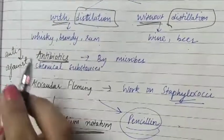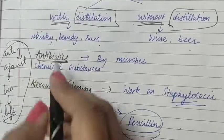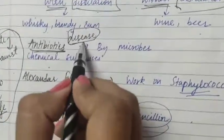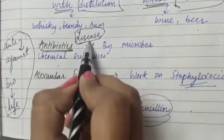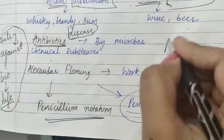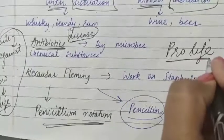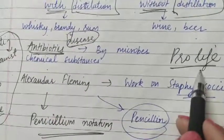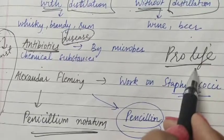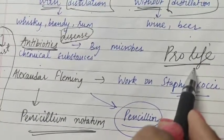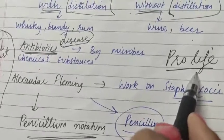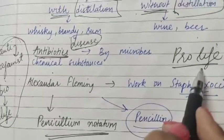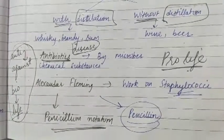In the context of disease, antibiotics are against the life of harmful microbes, but in the context of human health, they are pro-life. Antibiotics are chemical substances produced by some microbes that can kill or stop the growth of other disease-causing microbes.